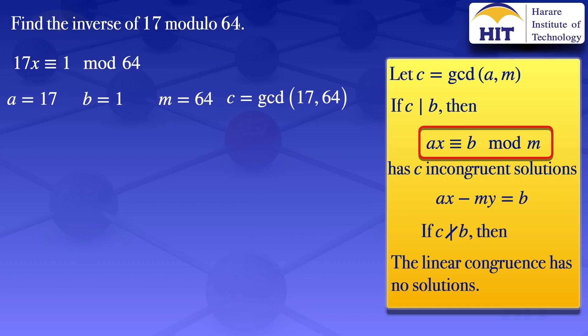Using the Euclidean algorithm, we have 64, and we look at the quotient — the floor value of 64 divided by 17. That floor value is 3, so 64 is equal to 17 times 3, and the remainder is 64 minus 17 times 3, which gives us 13. So it is plus 13 as the remainder.